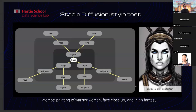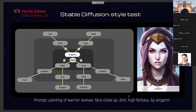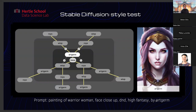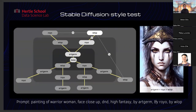Another example: starting with a base prompt of 'painting of a warrior woman,' then adding the style D&D high fantasy — Dungeon and Dragons — and then adding different artists like Artgerm, Rojo, and WLOP, who are very popular digital artists in the contemporary art scene. You can see how the subtle changes in artist style affect these images. This is actually the prompt we will try together right now.